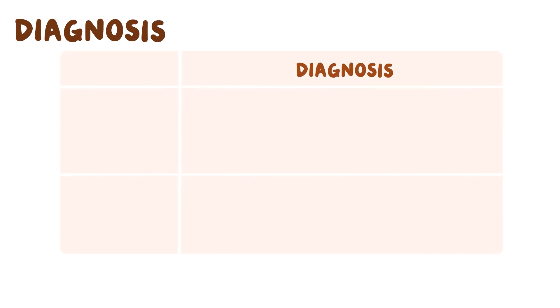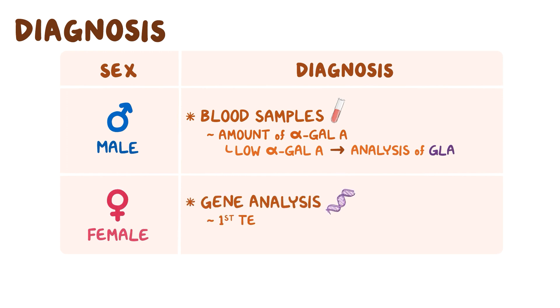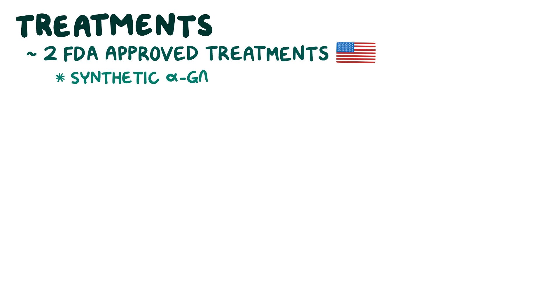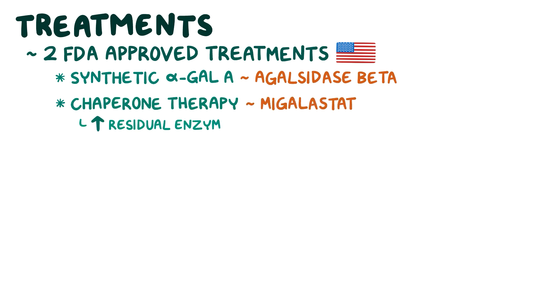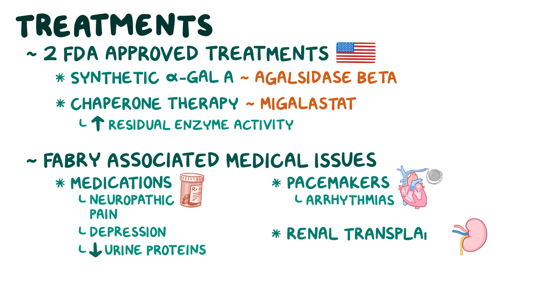Fabry disease is diagnosed differently depending on sex. For males at risk, blood samples can be tested to measure the amount of alpha-gal A. Low alpha-gal levels prompt analysis of the GLA gene for confirmation. In females, gene analysis should be the first test done, as many affected females have normal levels of alpha-gal A in their blood. There are two FDA-approved treatments in the United States: enzyme replacement therapy with a synthetic alpha-galactosidase A called agalsidase beta, and chaperone therapy with migalastat to help enhance residual enzyme activity. Otherwise, treatment is aimed at Fabry disease-associated medical issues, like medications to help with neuropathic pain, depression, and decreasing urine protein levels, or treatments like pacemakers to help with arrhythmias, or a renal transplant for renal failure.